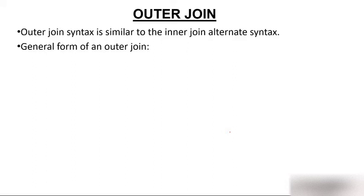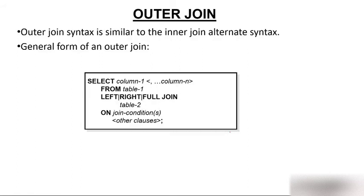Outer join syntax is similar to inner join alternate syntax. The general form is: SELECT columns FROM table1, then LEFT, RIGHT, or FULL JOIN, then table2 — because only two tables can be used. The first table is known as the left table and the second table is known as the right table. Then ON join_conditions and any other clauses you want.